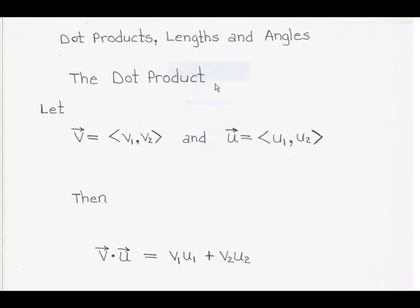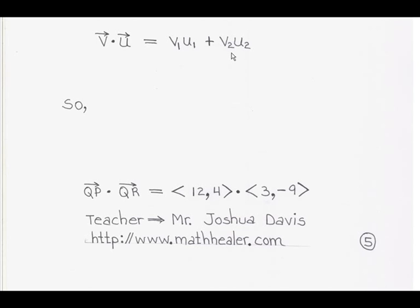Now let's go back and look at the definition of the dot product. Let the general vector v be written as ⟨v₁, v₂⟩ and the general vector u be written as ⟨u₁, u₂⟩. The dot product of vector v dotted with vector u is equal to v₁ times u₁ plus v₂ times u₂. Using this definition, we can now compute the dot product of QP and QR.